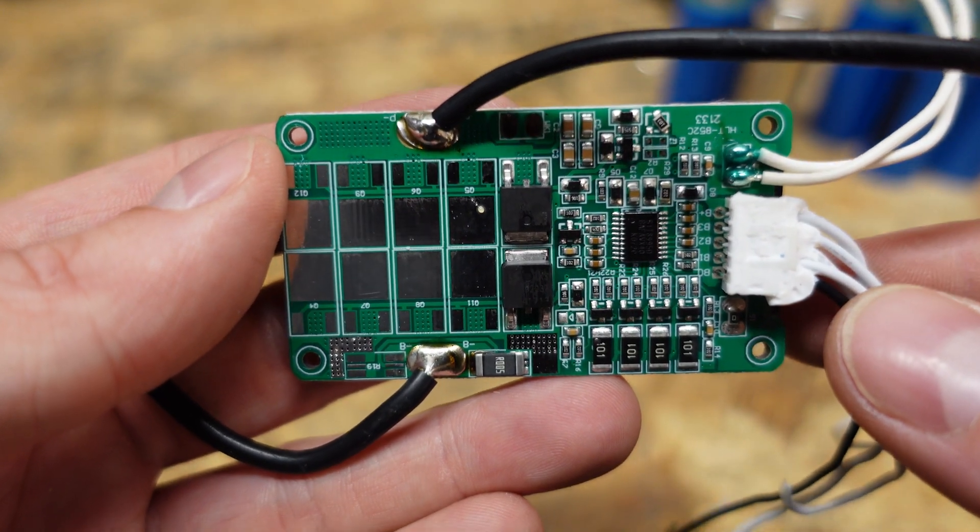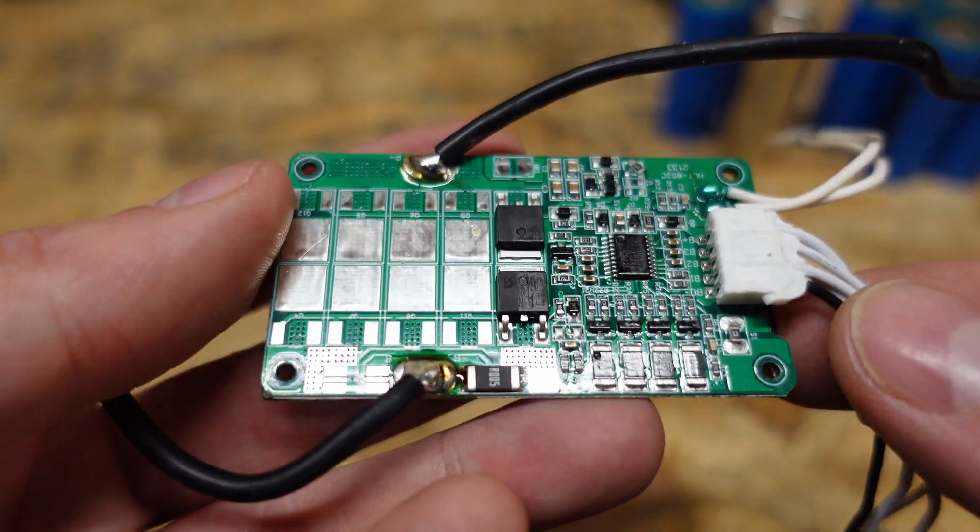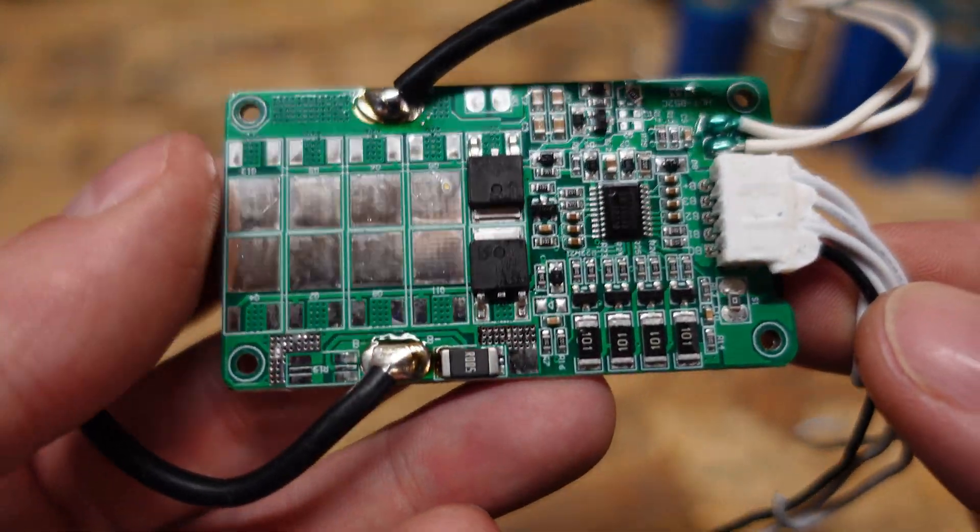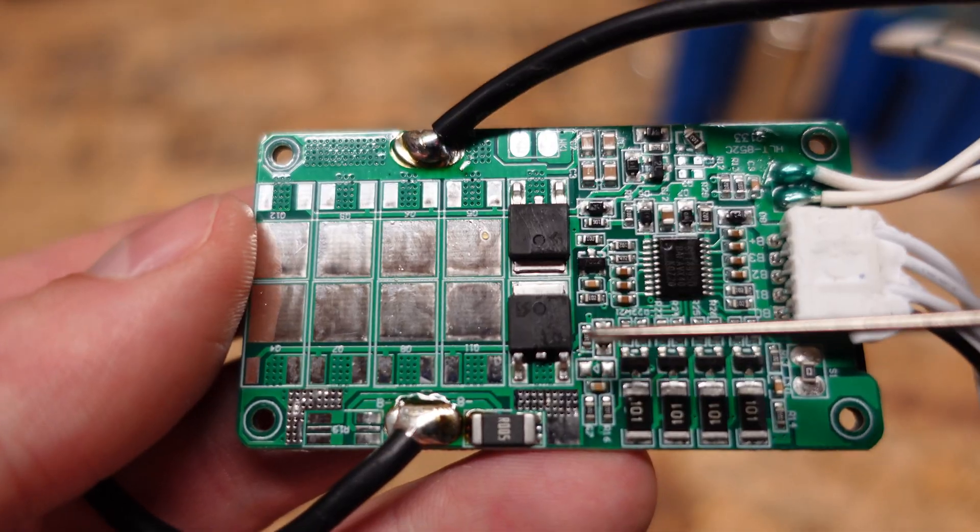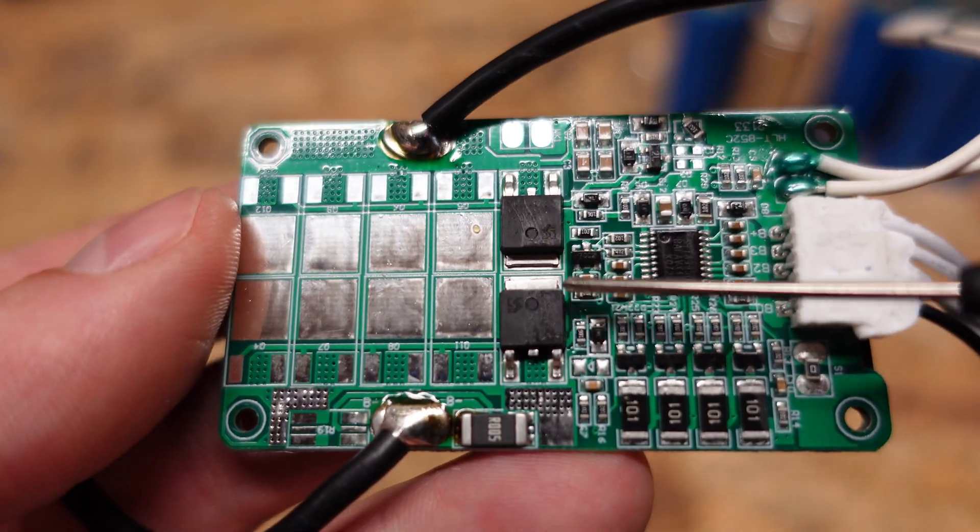So I did pop the cover off the BMS here just so we can take a quick look. And once again look how tiny this thing is. You can see they only have two FET transistors soldered on here. This will be the on-off switch for the charging and discharging.